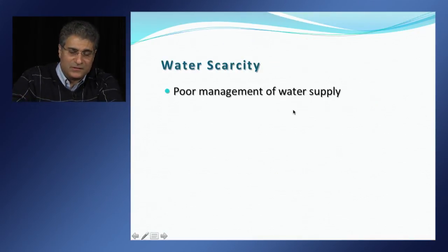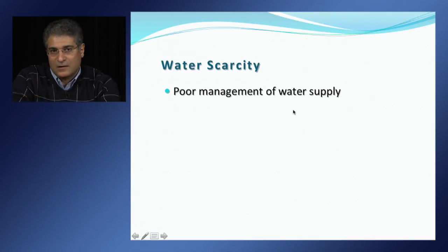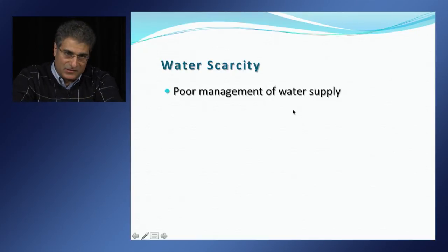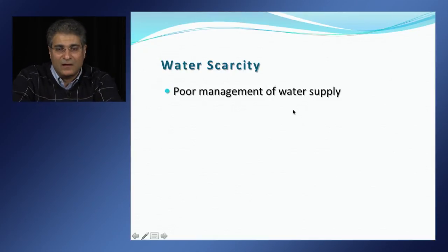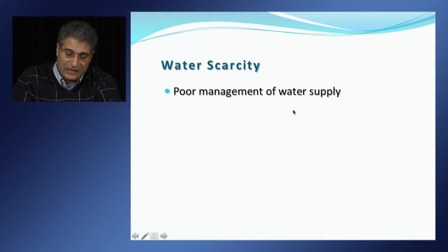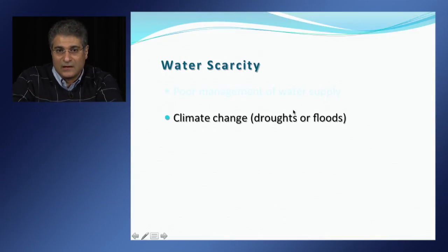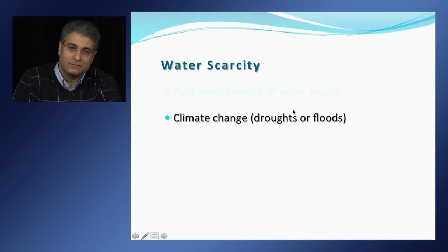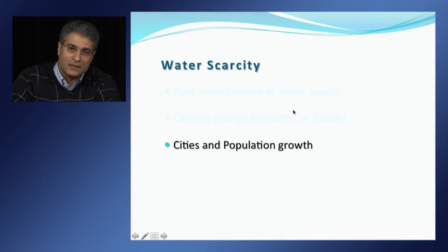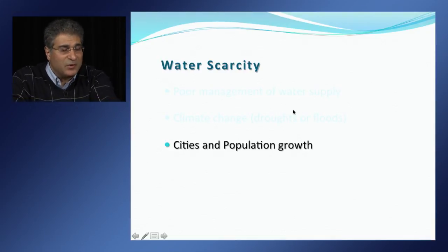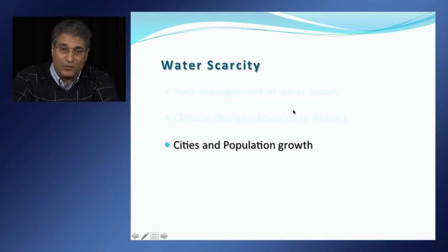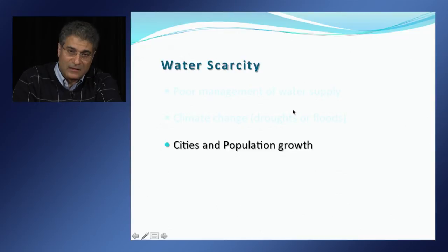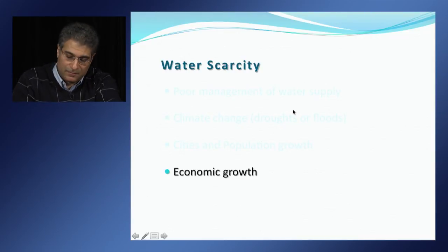Water shortage is the result of many factors, including poor management of water supply — particularly in agriculture — climate change such as droughts or floods, cities and population growth which demand more water, and finally economic growth.